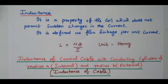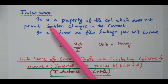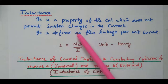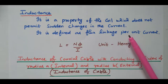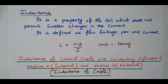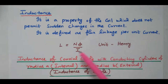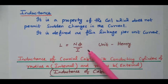First we will see the inductance. Inductance is a property of the coil which does not permit sudden changes in the current. The main property of the inductor is it will not allow sudden change in current — current increases or decreases gradually. It is defined as flux linkage per unit current, that is L equal to Nφ divided by I.